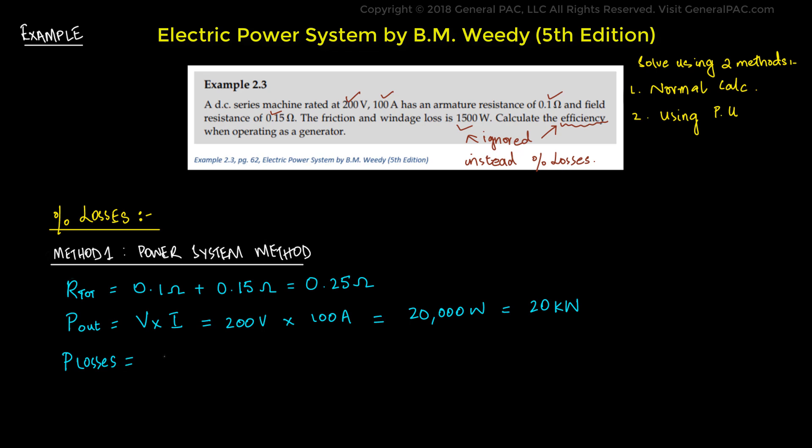The P losses is described by the equation I squared R. We get 100 amps squared times 0.25 ohms, which equals 2500 watts. The percent losses is calculated by the formula P losses over P output times 100. The P losses was 2500 watts and the P output is 20 kW or 20,000 watts. We multiply that by 100, which equals 0.125 times 100, or 12.5%. That is the percent losses.